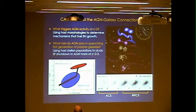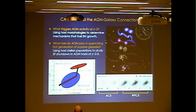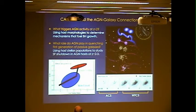We've been trying to address two primary questions regarding AGN at redshift two with the CANDELS data. The first is trying to understand what triggers black hole growth at redshift two — the epoch where black hole growth is at its peak — using rest-frame optical imaging from WFC3 to look for telltale signatures of interactions and mergers. The second question is what role, if any, AGN play in quenching the first generation of passive galaxies, driving them onto the red sequence.